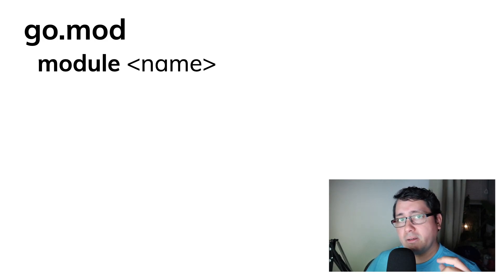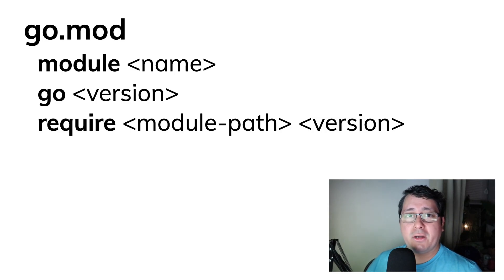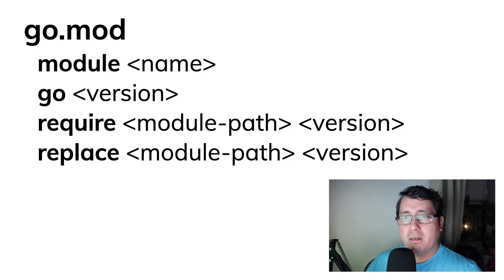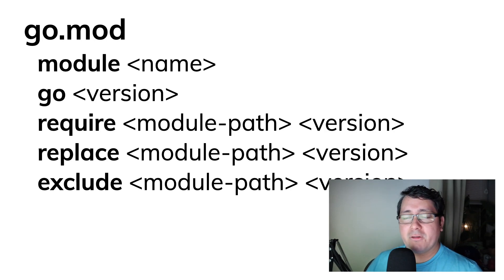What is important about go.mod is that it does more than that. It is structured around different keywords: there is a 'module' keyword that indicates the name of the module, a 'go' keyword that indicates the Go version, and at least three different blocks — 'require', 'replace', and 'exclude'. Require indicates your dependencies, the packages you depend on for building your project.